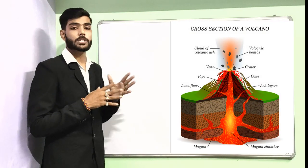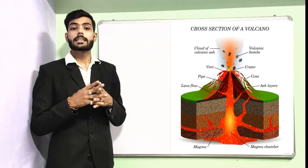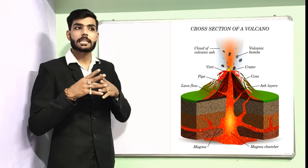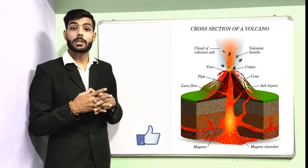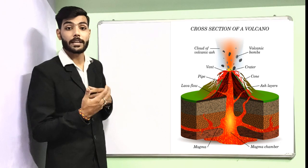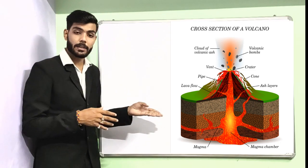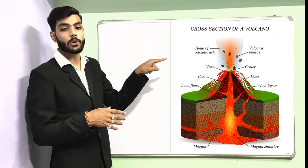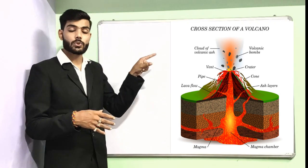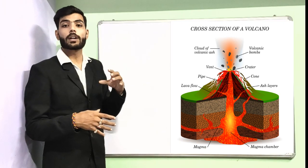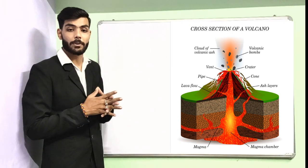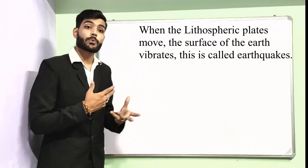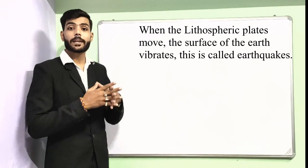Looking at the cross-section of a volcano, we can see the cloud of volcanic ash and the volcanic rocks. Inside the volcano is the magma chamber, from which magma flows out through the vent, and a cloud of volcanic ash is formed.